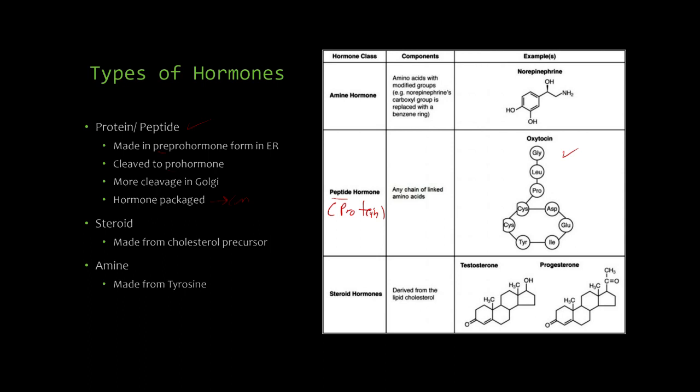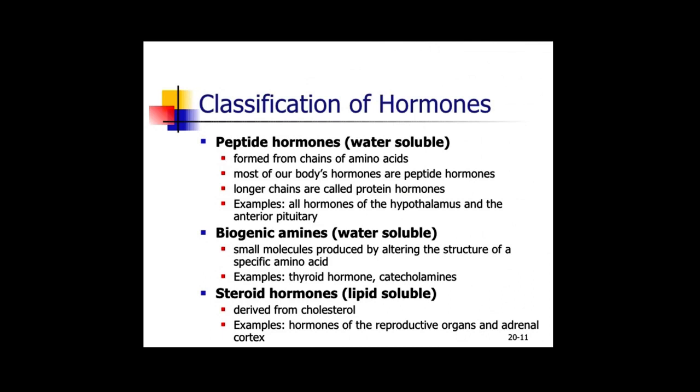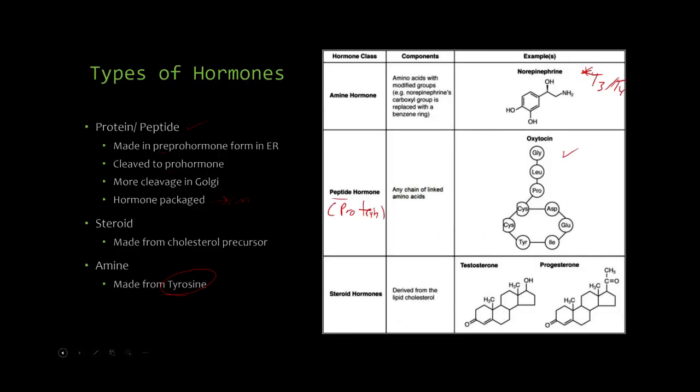That's the first class. Keep in mind the examples of each of these classes, you may see a question on that. Oxytocin is a classic example of a peptide hormone. There are a bunch; most hormones fall in this class. So when in doubt, it's a protein or peptide hormone. Amine hormones all have in common that they're made from tyrosine, and norepinephrine is a classic example.